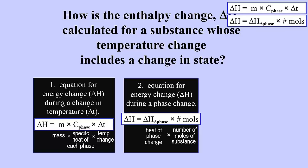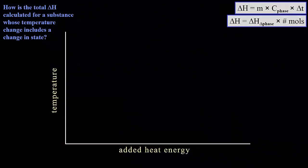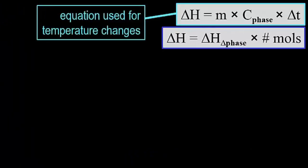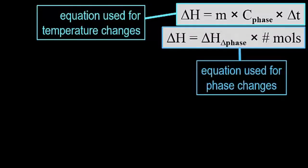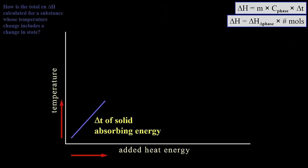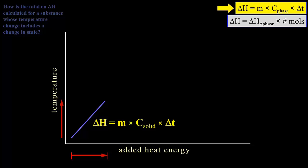Let's keep the two equations for reference as we go through the energy changes when heating a substance, keeping in mind that the first equation will be used when a change in temperature occurs, and the second equation is used when there is a phase change. The first part of the graph gives the temperature change of a solid absorbing heat, so we use the equation incorporating temperature change. This is the first calculation.